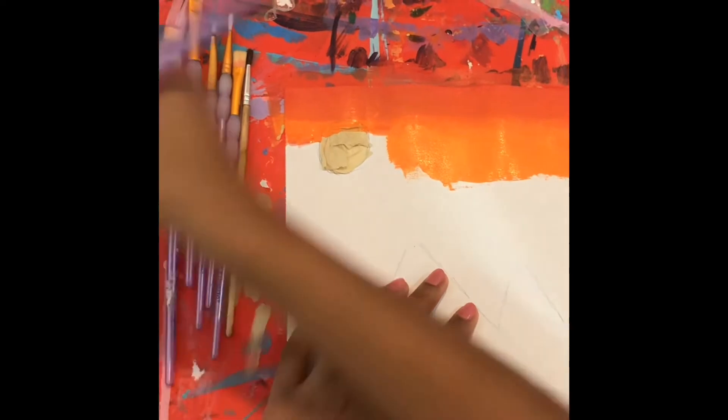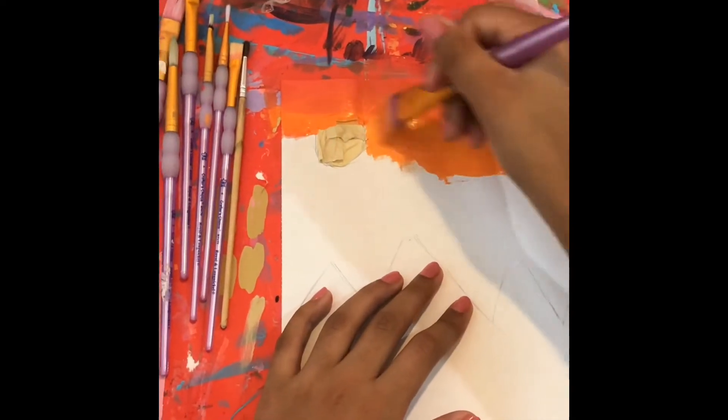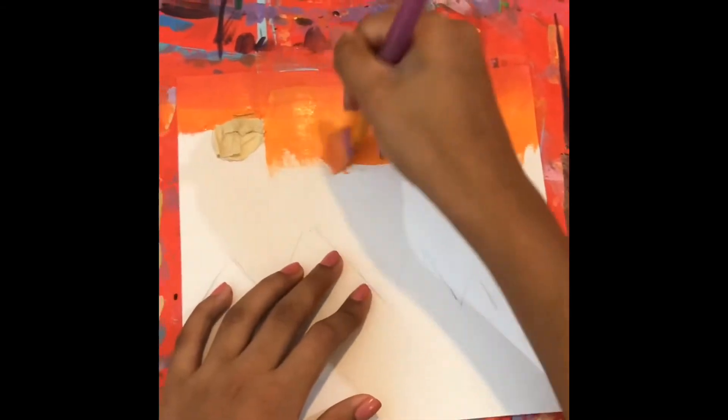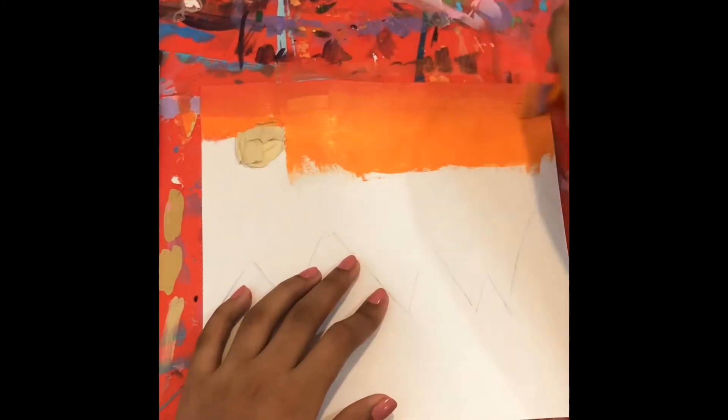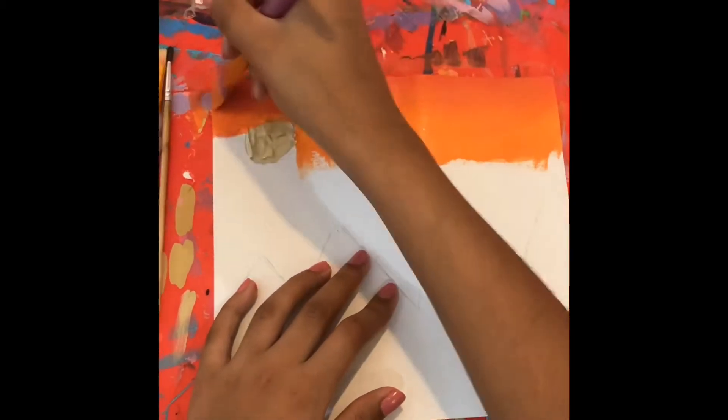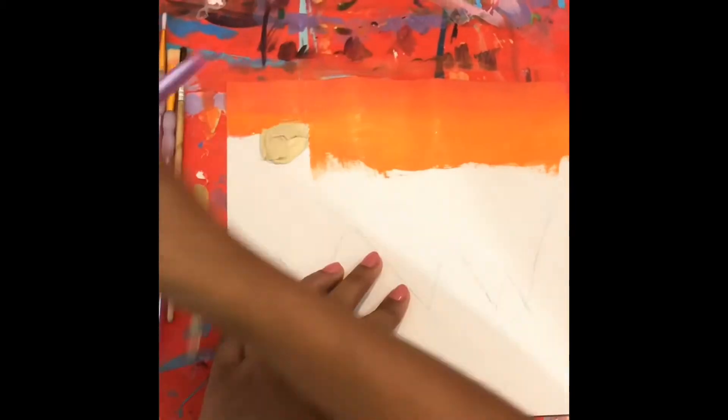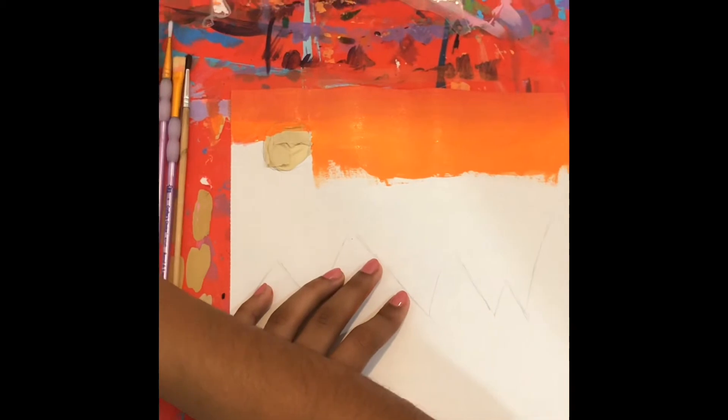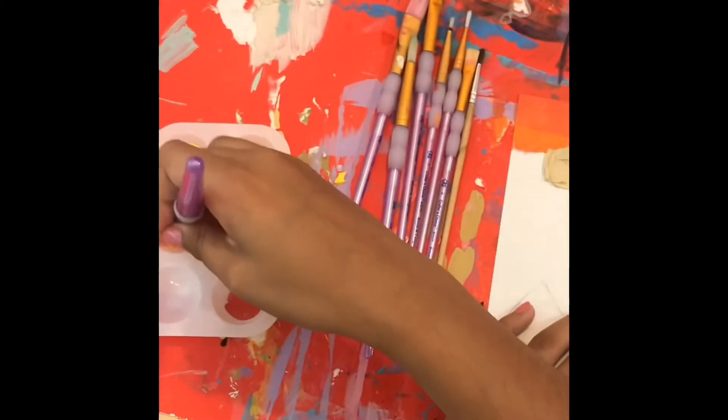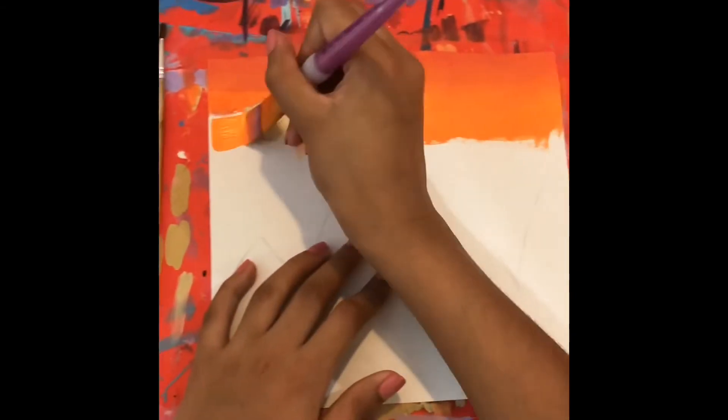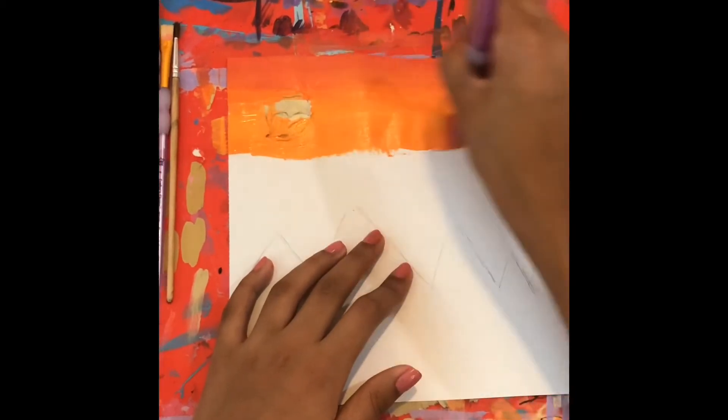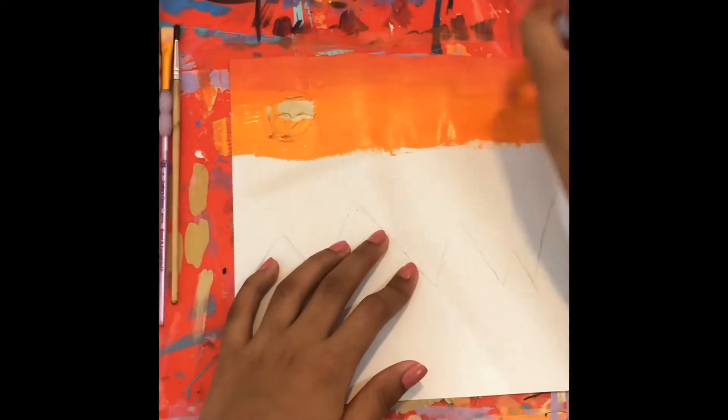Then you want to take more and make sure you blend it over the paint or it won't blend well. You want to make it go over the layers you've done before so it goes more evenly. You want to do it every part around the sun. It's fine if you paint over the sun because it's covered with tape.